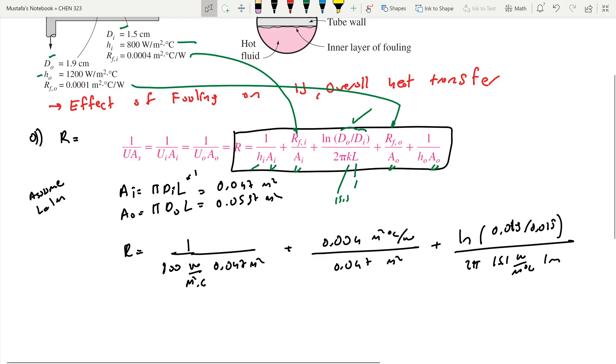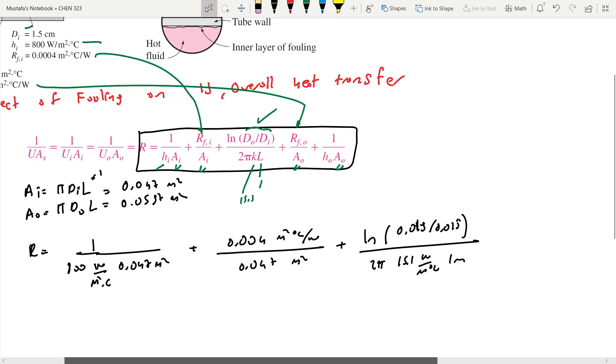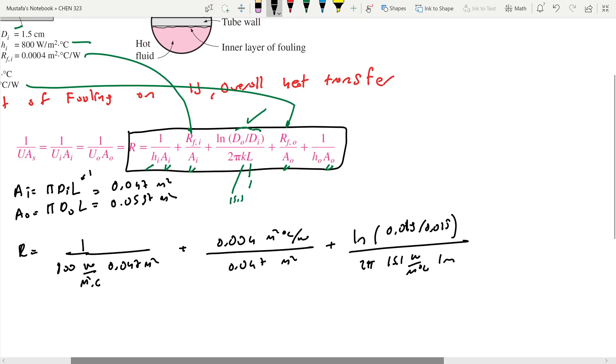We have two terms already, so we need two more terms here. We have 0.0001, this is the resistance for the outer section in m²·°C/W, divided by the outer surface area 0.0597 m².